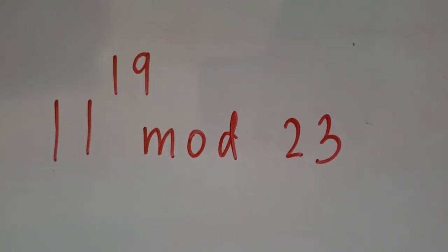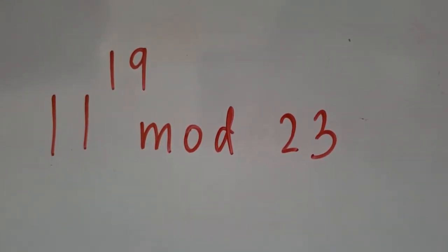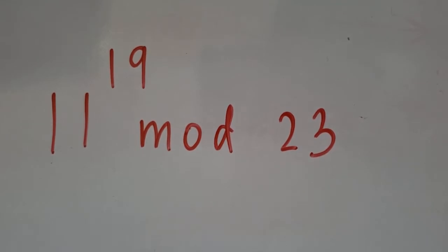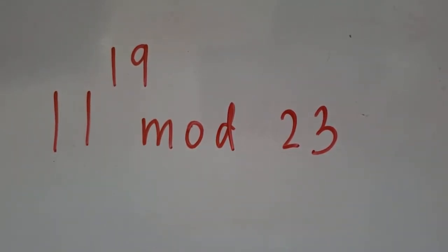The problem is 11 to the power 19 mod 23. I will show you a method which is a combination of the iterative method and the factoring method. Let's get started.